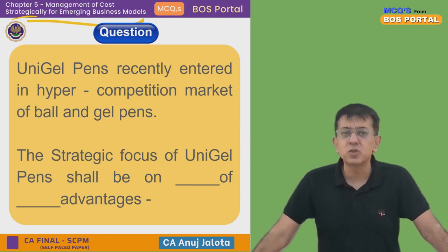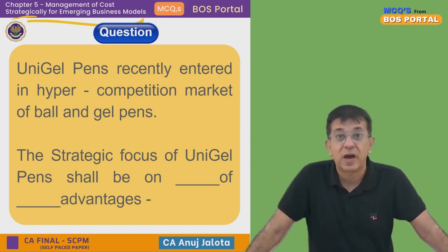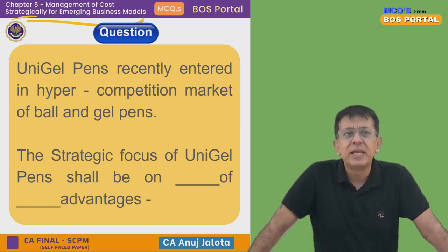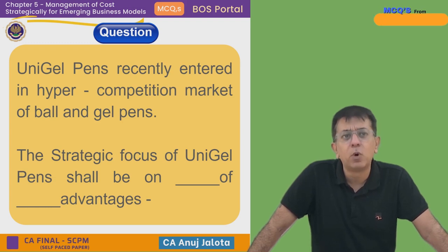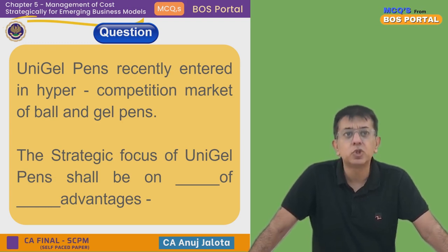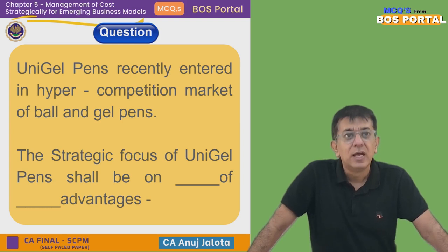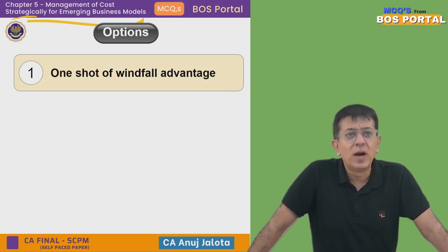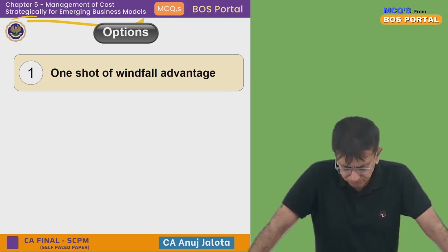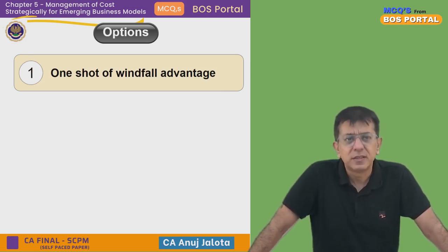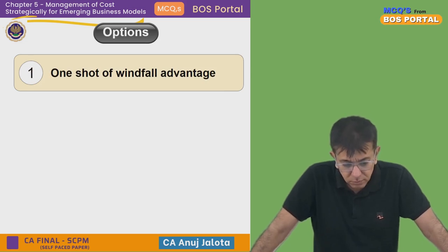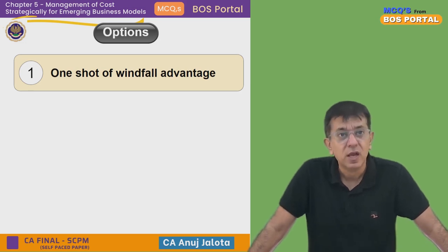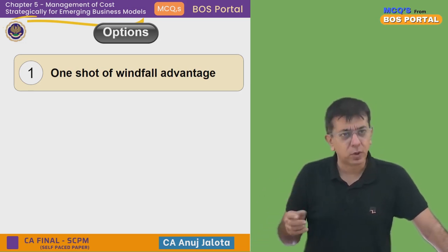So, to recap what happens in hyper competition. Reading the question once more: Unigel Pens recently entered into a hyper-competition market of ball and gel pens. The strategic focus of this company shall be on dash of dash advantages. Option one — one shot of windfall advantage — that cannot be the answer. It has to be short-term, temporary advantages that keep on coming. Windfall means one time, possibly a big advantage — but there'll be no single big advantage in hyper competition.